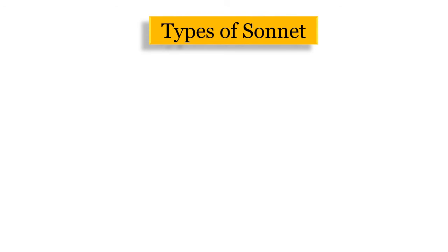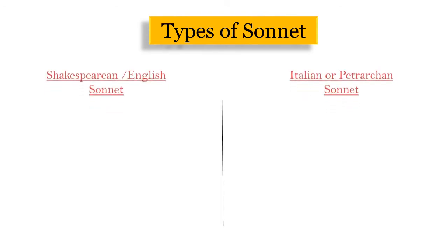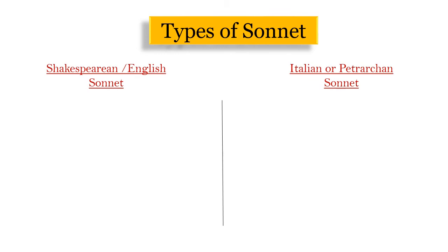Now let's discuss the types of sonnets. There are two famous types of sonnets which include the Shakespearean sonnet, also called the English sonnet, and the second is the Italian sonnet, also called the Petrarchan sonnet.